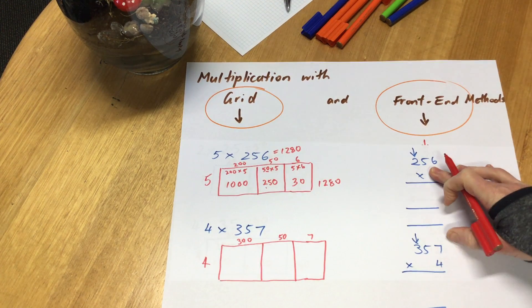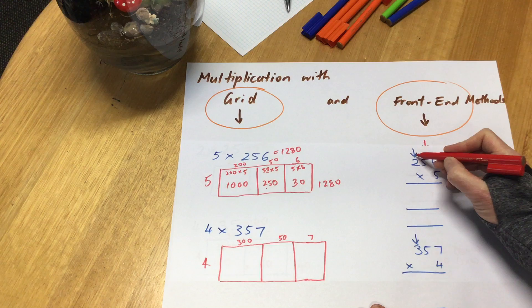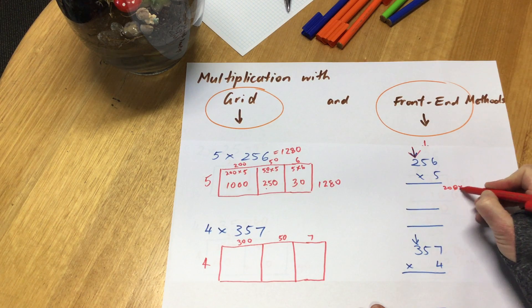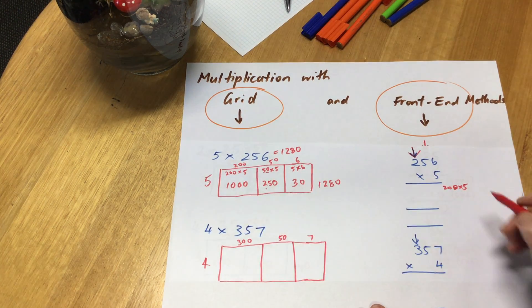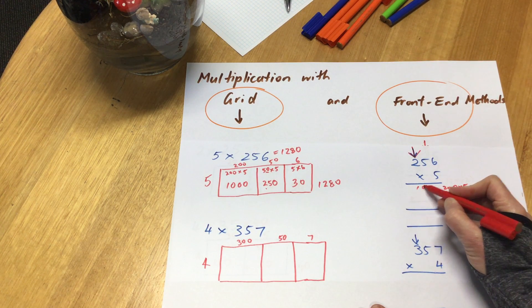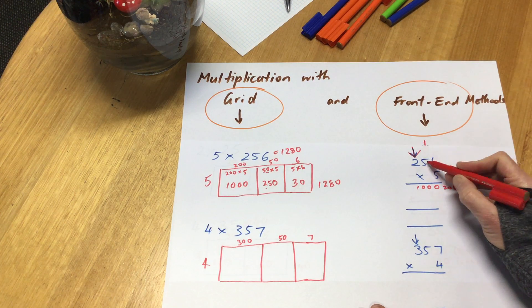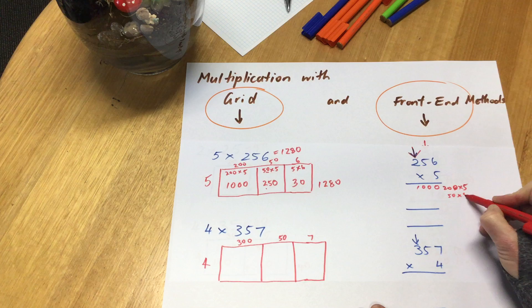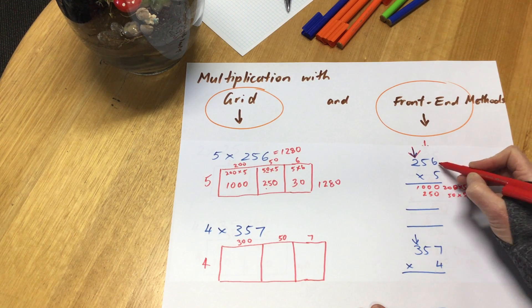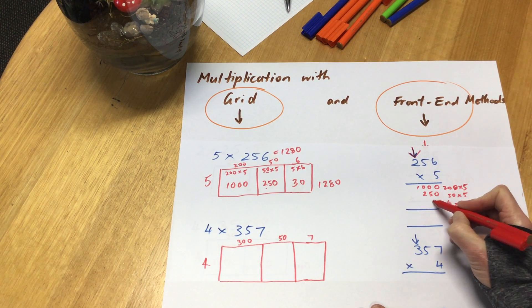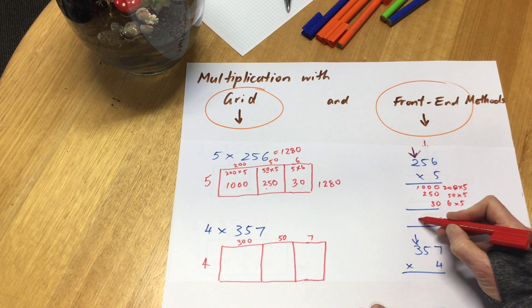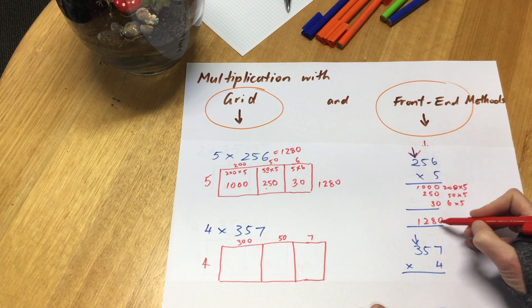Let's check it over here with our front-end method. Starting at the front end, 200 times by 5, just like I did in my grid method. 200 times by 5 is my 1000. Then I've got 50 times by 5, which is my 250. And my 6 times by 5, which is my 30. Then I'm adding them all up together to get my 1,280.